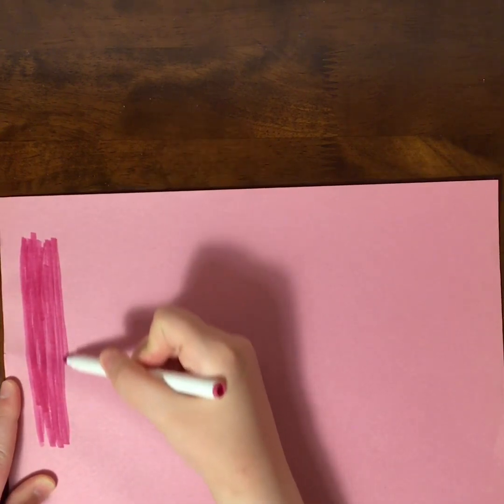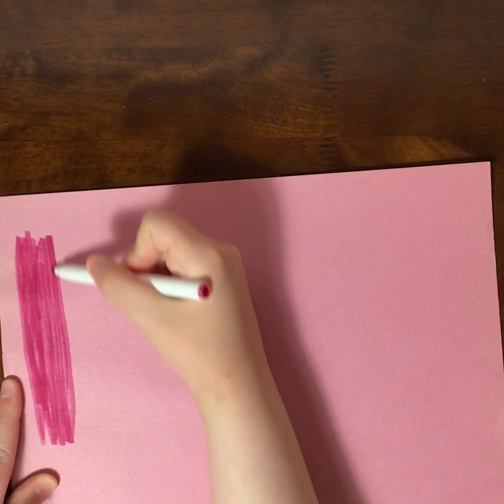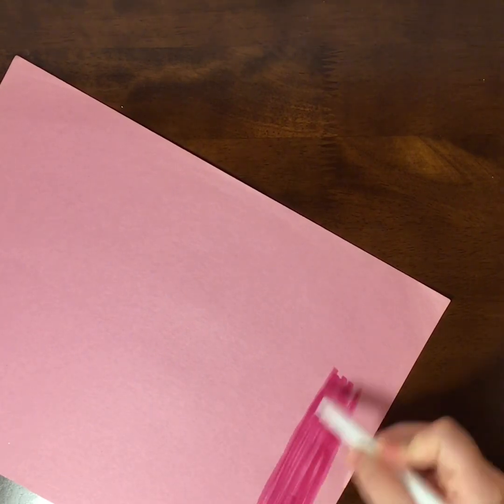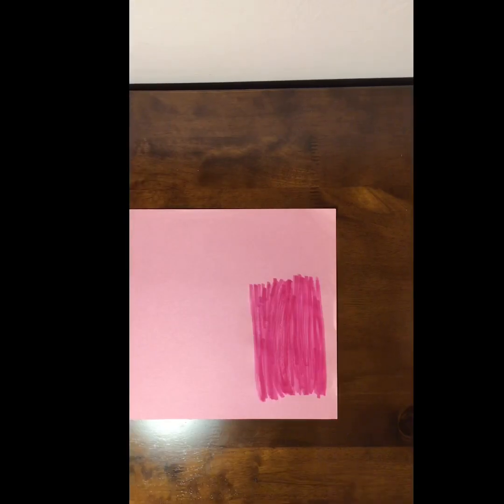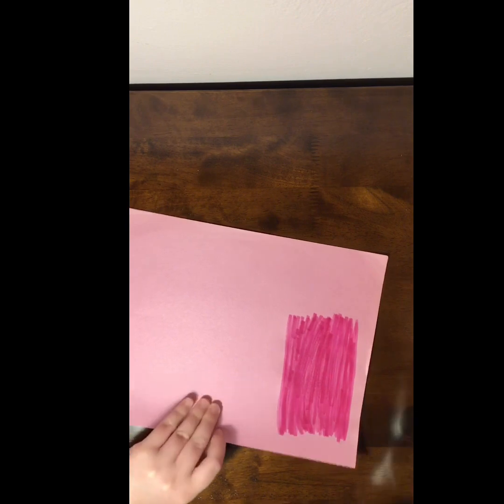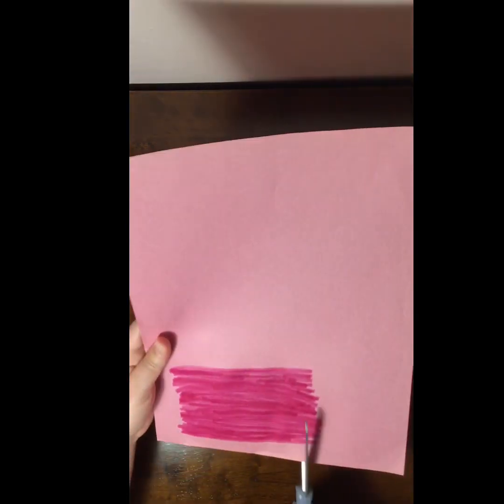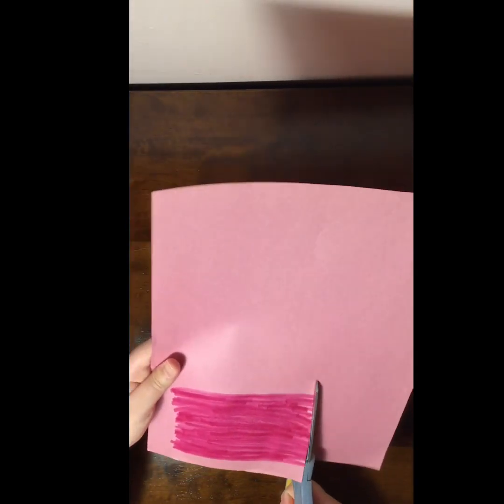So I just took my marker and I'm going to make a strip, or actually a square, of darkened paper. Here I just took my square of paper that I used my markers to make darker, and I'm just going to cut that square right on out.